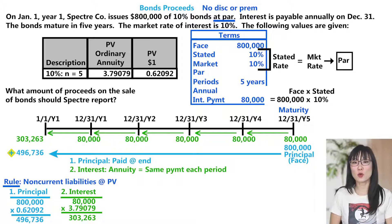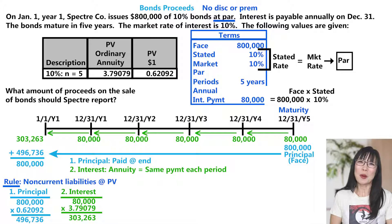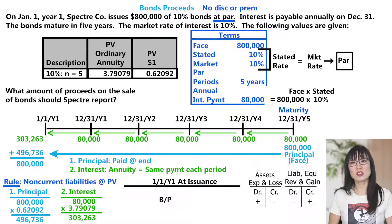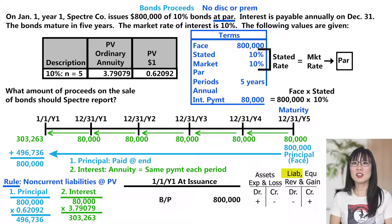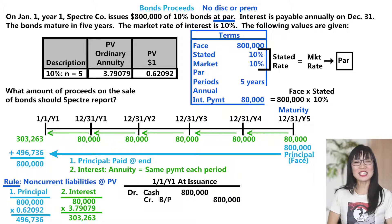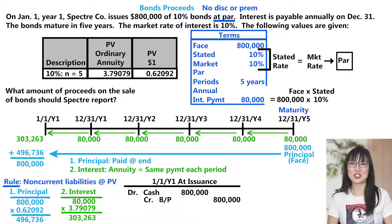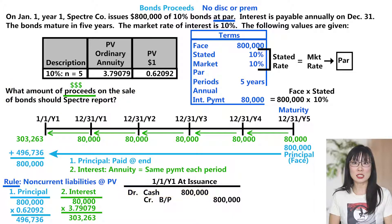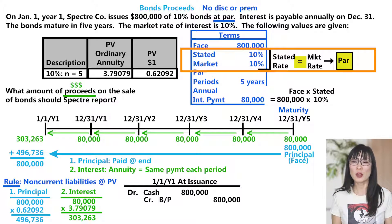Now we add these together: $303,263 + $496,736 = $800,000 (rounded from $799,999 due to rounding). This is what the borrower gets at issuance. For bonds, always start with the bond payable — that's the face value, your nice round number, here $800,000. Bond payable is a liability that's increasing, so that's a credit. The other side of the entry is cash. When you borrow money you get cash. Back to the question: what amount of proceeds on the sale of bonds should Specter report? Proceeds just means money — the answer is $800,000. When the stated rate equals the market rate, the bonds are issued at par, meaning bond proceeds equal the bond payable.